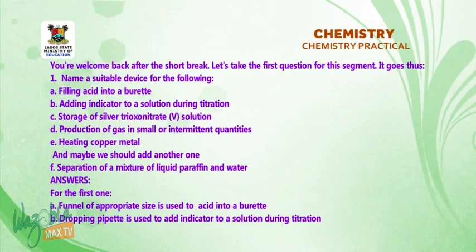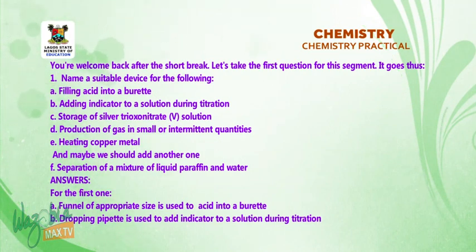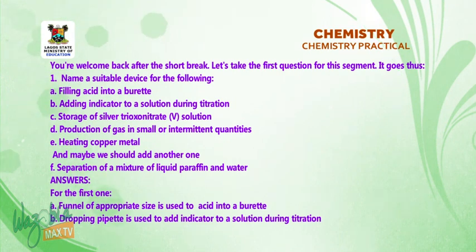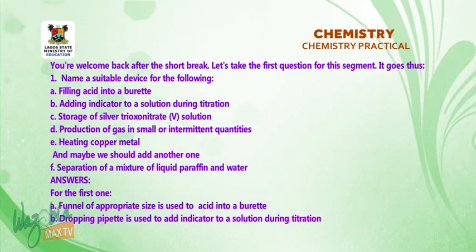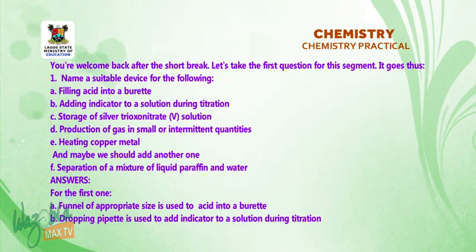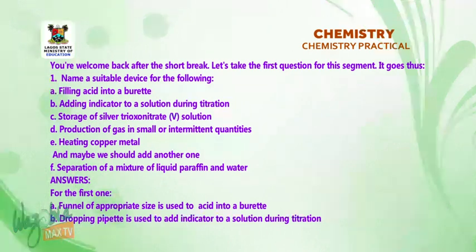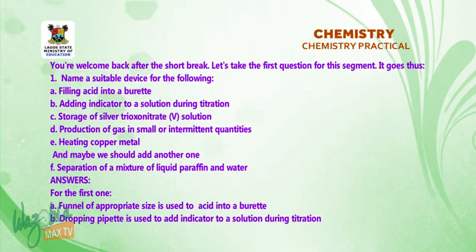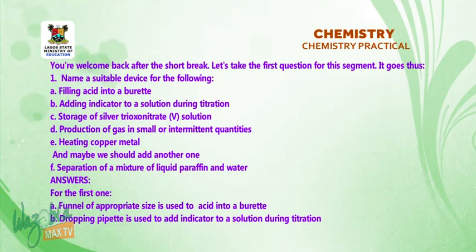You are welcome back after the short break. Let's take the first question for this segment: name a suitable device for the following. A. Filling acid into a burette. B. Adding indicator to a solution during titration. A funnel of appropriate size is used to fill acid into a burette. A dropping pipette is used to add indicator to a solution during titration.